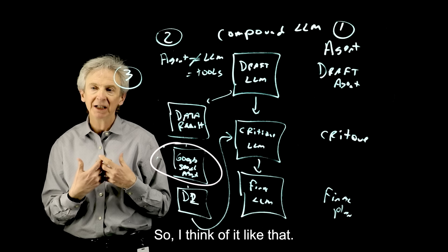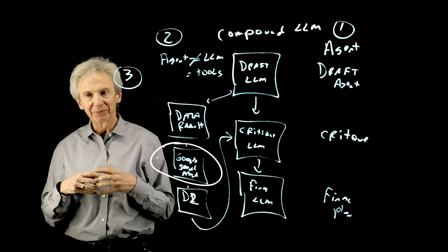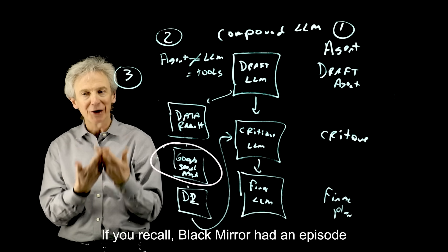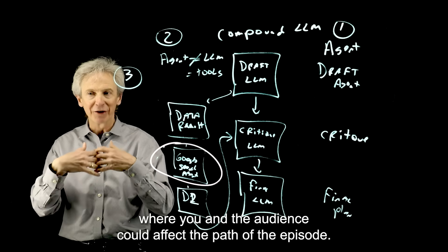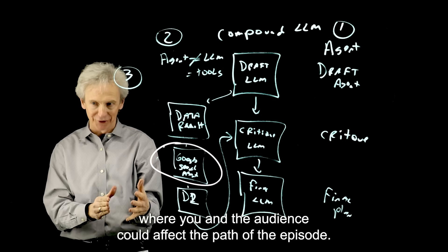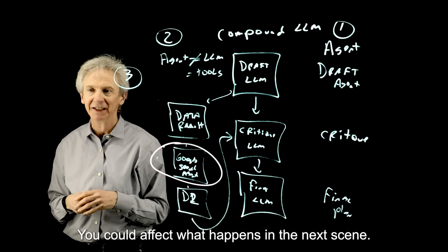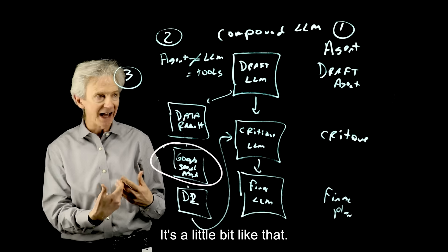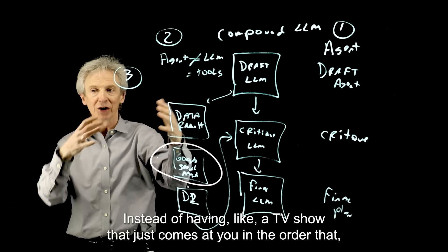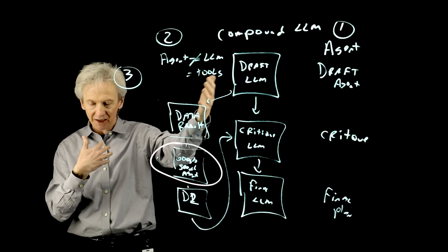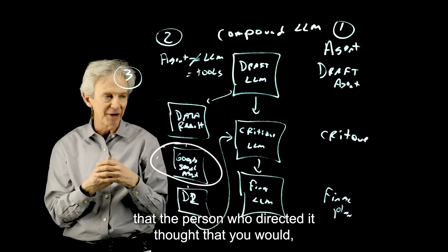So you kind of can use one of these agents as an orchestrator to step through the rest of the process. So I think of it like that, if you recall, Black Mirror had an episode where you and the audience could affect the path of the episode. You could affect what happens in the next scene. It's a little bit like that.